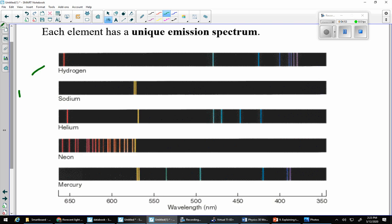And each gas has its own, each element, I should say, has its very own unique emission spectra. So, we've got hydrogen, we've got sodium, we've got helium, neon, and mercury, to name a few. And notice how they only give off particular wavelengths or frequencies of light.